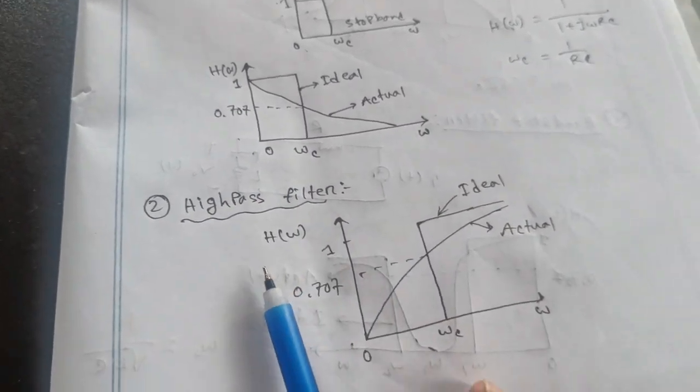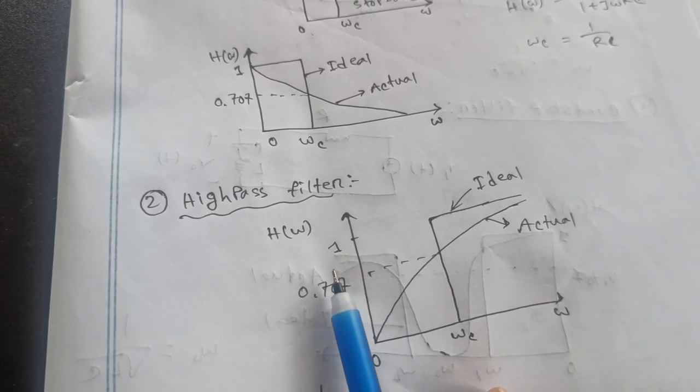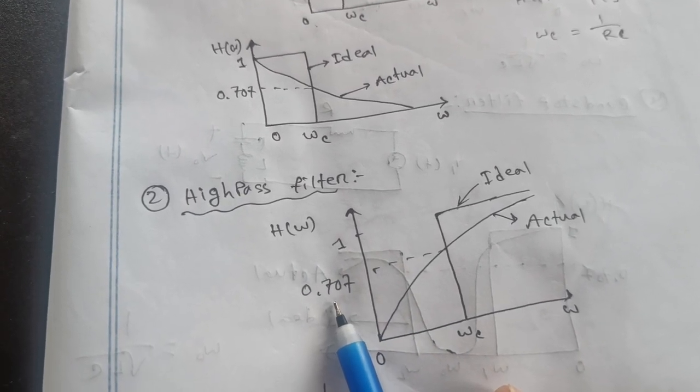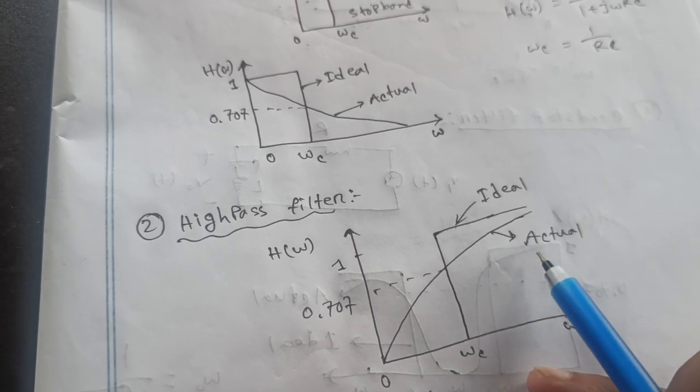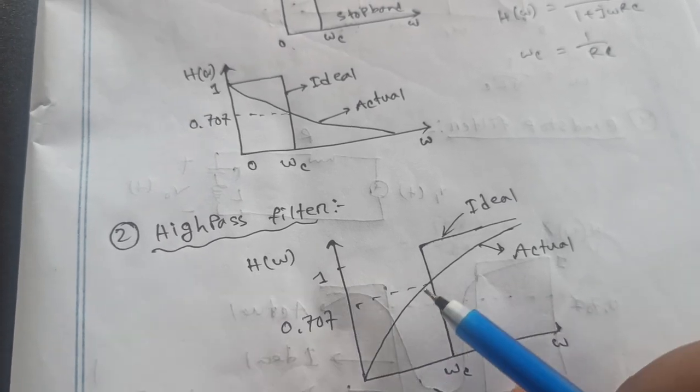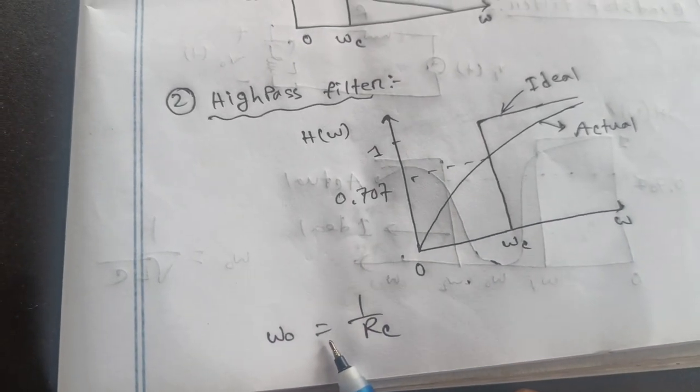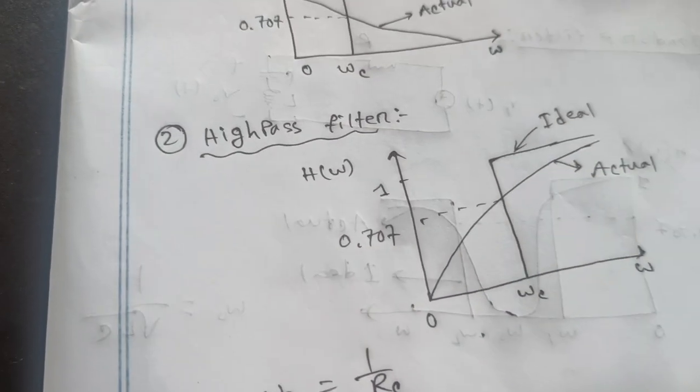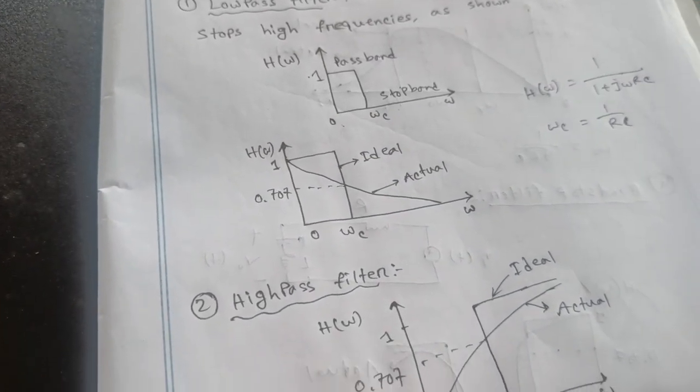Number two, high pass filter. High pass filter does nothing but point 0.707 and 0.707 is ideal factor and actual factor. That means 0 to high frequency, high filter. That means high pass filter. That omega equal to 1 by RC. That was low pass filter, high pass filter.